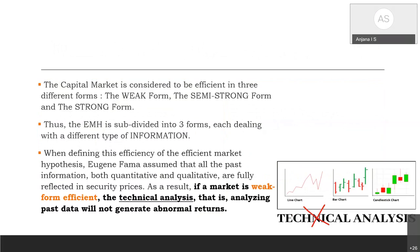The capital market is considered to be efficient in three ways based on information: the first is weak form efficiency, the second is semi-strong form efficiency, and the third is strong form efficiency. For the weak form, Eugene Fama assumed that all past information is already reflected in stock prices — one of the major principles of the Efficient Market Hypothesis.